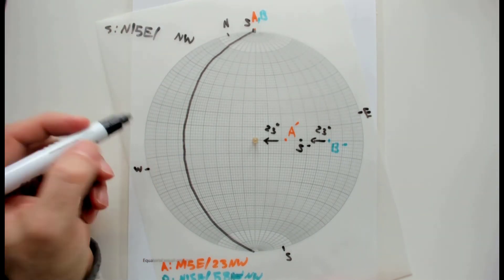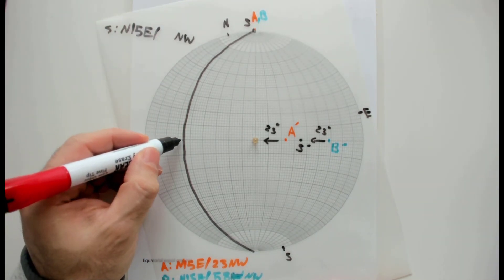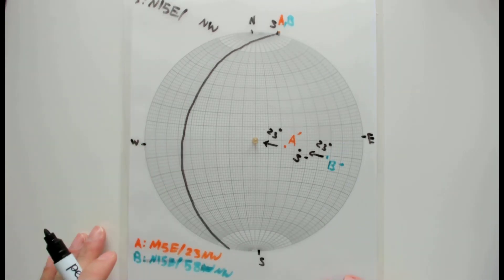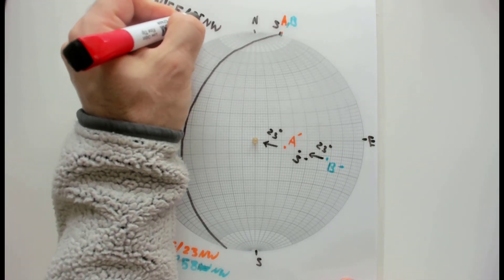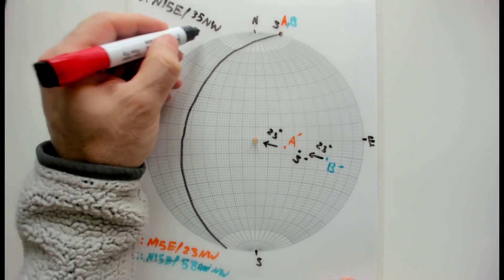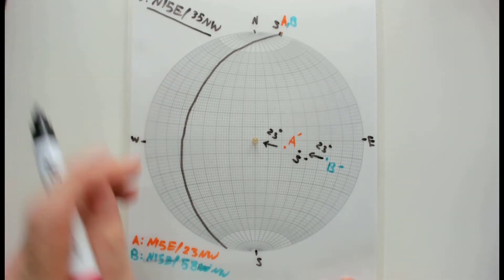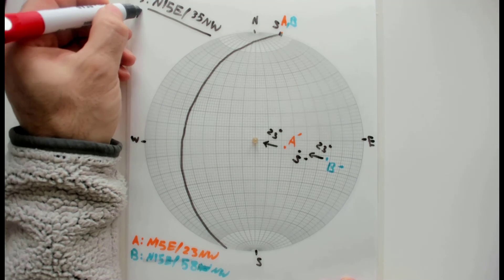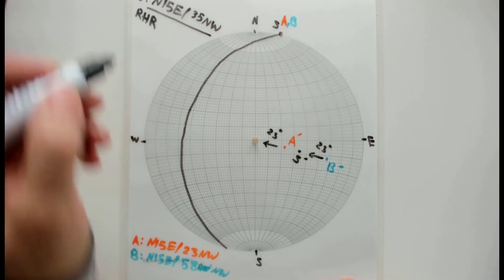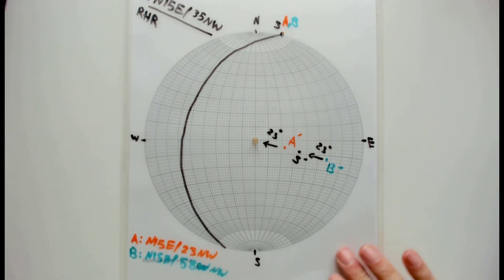And what is the dip? It's dipping towards, as you see, towards northwest. You can write northwest. How many degrees? 10, 20, 30, 32, 34, 35 degrees. This is 35 degrees.